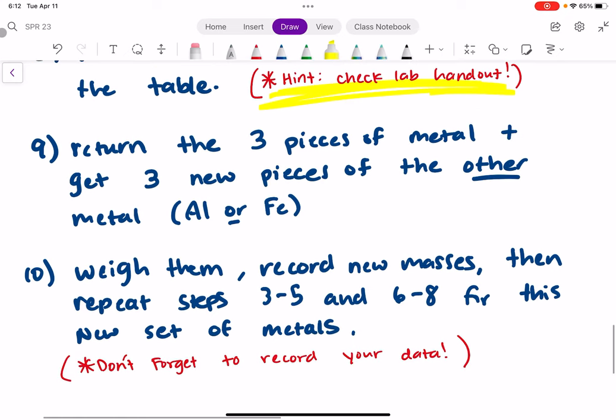In step nine, you're going to return the three pieces of metal that you started with and get three new pieces of the other metal. If you started with aluminum, you're going to return those to the cart and then get three pieces of iron.